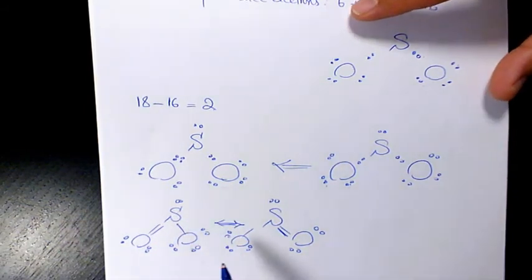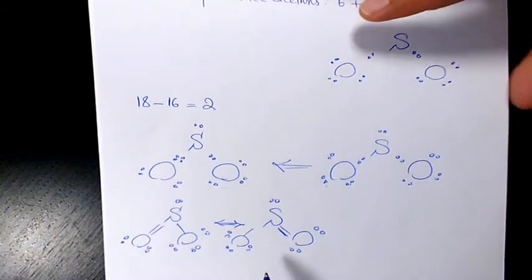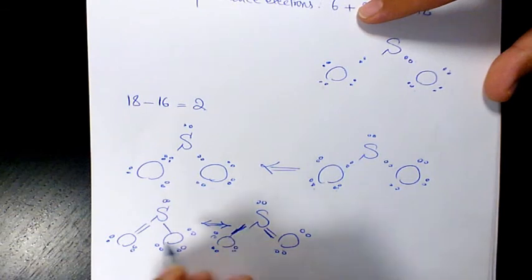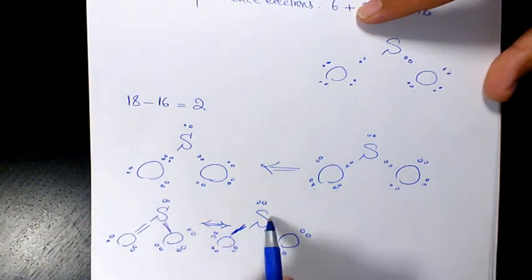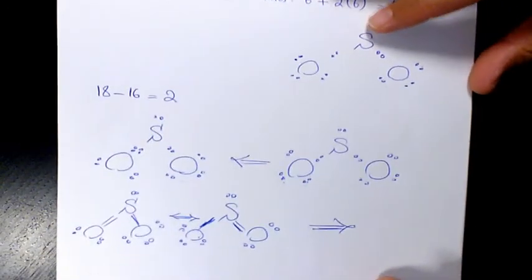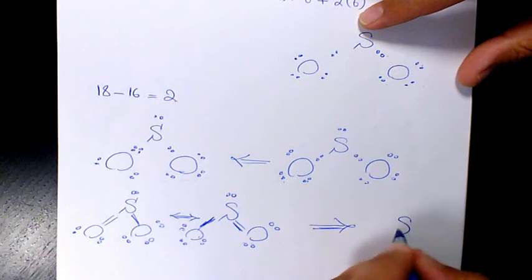However, if you see, oxygen is more electronegative compared to sulfur, so this single bond is slightly more negative compared to sulfur. So another more stable Lewis structure for this compound is going to be...